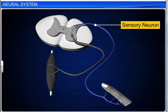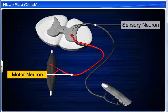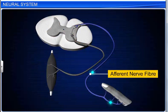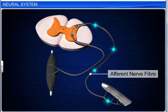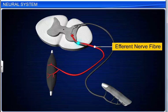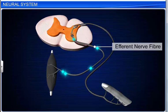Afferent, or sensory nerve fibers, and efferent, or motor nerve fibers. Afferent fibers conduct nerve impulses from the sense organs to the central nervous system. Efferent fibers conduct nerve impulses from the central nervous system to the involuntary organs, muscles, and glands.